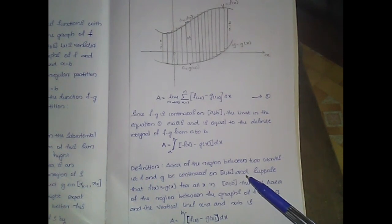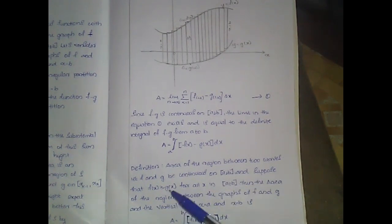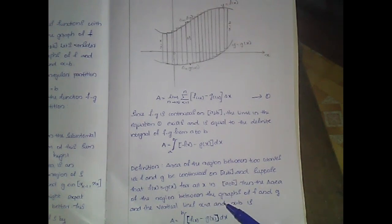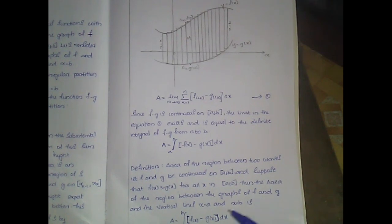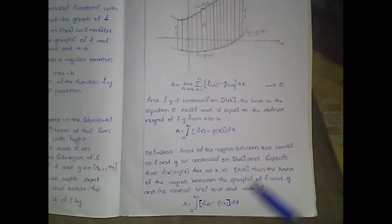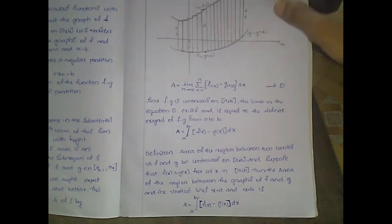If f and g are continuous on [a, b] and f(x) is greater than or equal to g(x) for all x in [a, b], then the area of the region between the graphs of f and g and between the vertical lines x = a and x = b is A equal to the integral from a to b of [f(x) minus g(x)] dx.